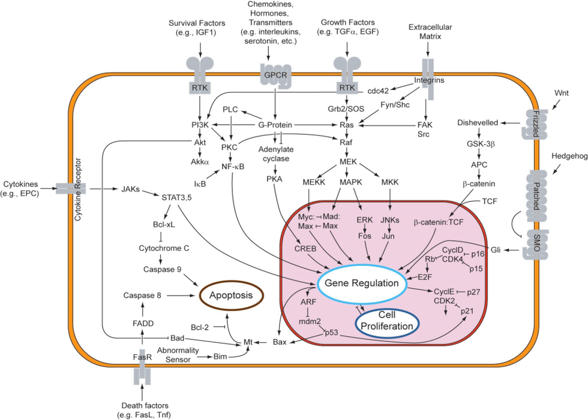Cells receive information from their neighbors through a class of proteins known as receptors. NOTCH is a cell surface protein that functions as a receptor. Animals have a small set of genes that code for signaling proteins that interact specifically with NOTCH receptors and stimulate a response in cells that express NOTCH on their surface. Molecules that activate or, in some cases, inhibit receptors can be classified as hormones, neurotransmitters, cytokines, and growth factors — in general called receptor ligands. Ligand-receptor interactions such as that of the NOTCH receptor are known to be the main interactions responsible for cell signaling mechanisms and communication. NOTCH acts as a receptor for ligands that are expressed on adjacent cells.